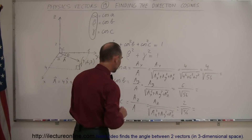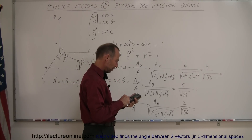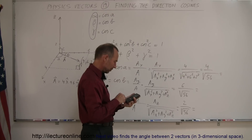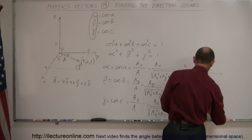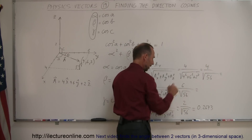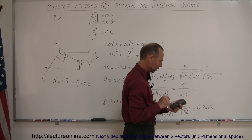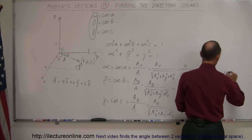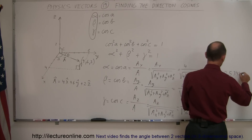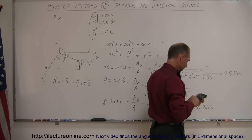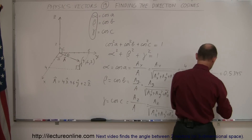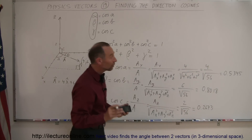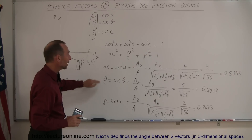So for gamma, the cosine of C equals 2 divided by the square root of 56, which equals 0.2673. Alpha is 4 times that, so alpha equals 0.5345. And beta equals 6 divided by the square root of 56, which equals 0.8018. Those are the three direction cosines of this particular vector: alpha, beta, and gamma.